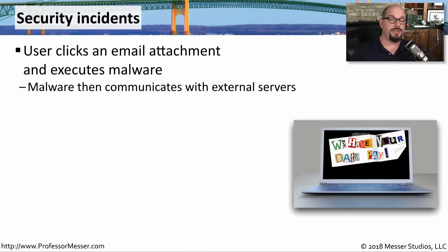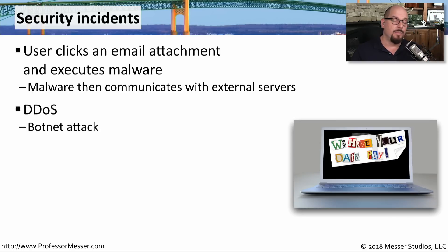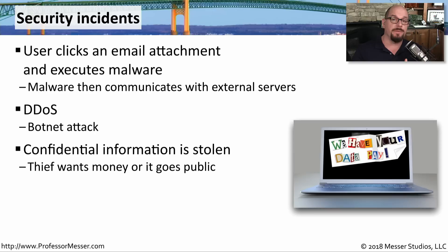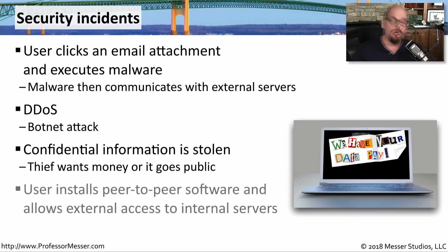It's also important that your organization have a set of policies and procedures for when a particular security incident occurs. For example, if someone receives an email with an attachment, clicks on it, and installs malware, there need to be policies on how to handle that. But what if it's something more broad, like a distributed denial of service attack? There needs to be policies for that as well. Sometimes confidential information is stolen or made public, and the thieves may demand money to keep it secret. Or someone on the inside may have installed peer-to-peer software, giving external parties easy access to internal resources.